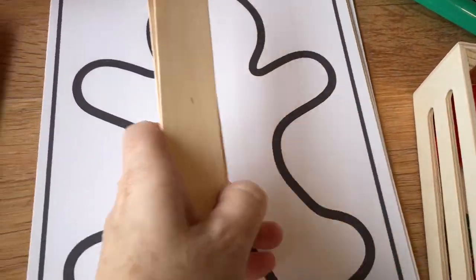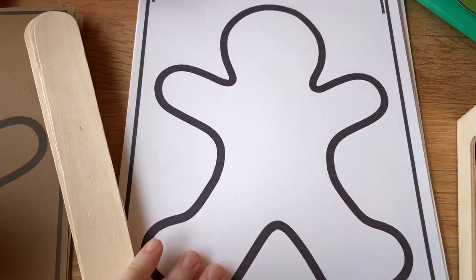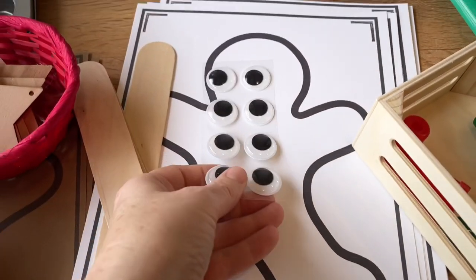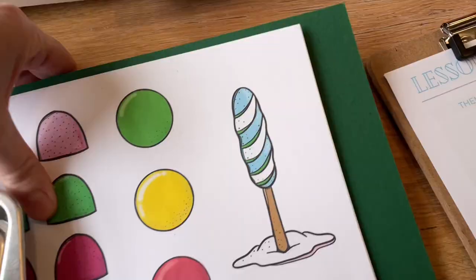And then this one is just going to be a prop since we're doing the gingerbread man story. Probably have them do something really simple like watercolor it and then put these cute little eyes on there.